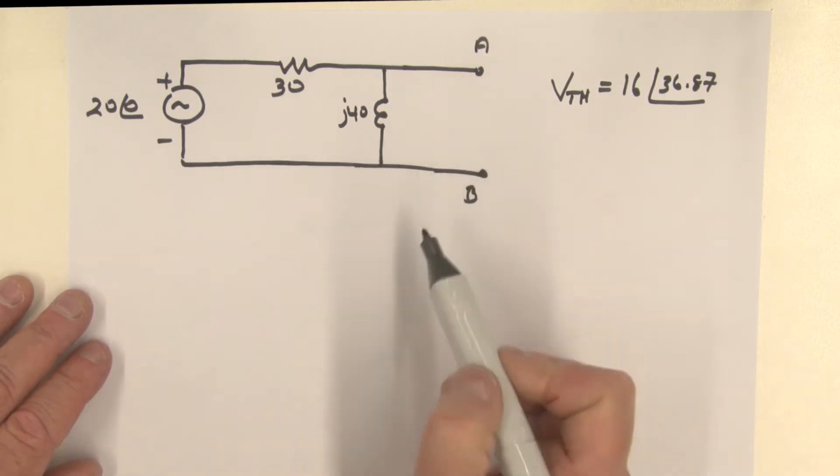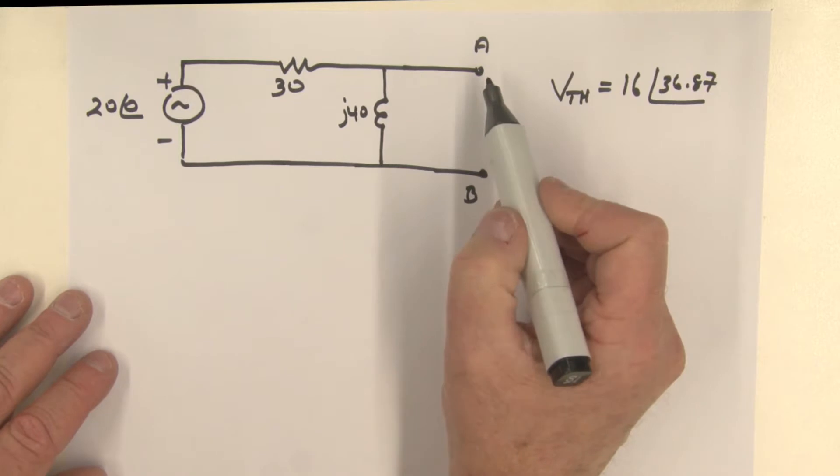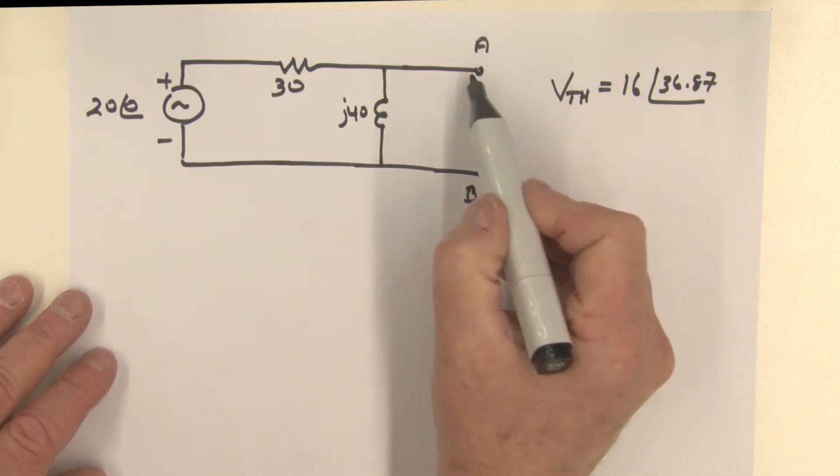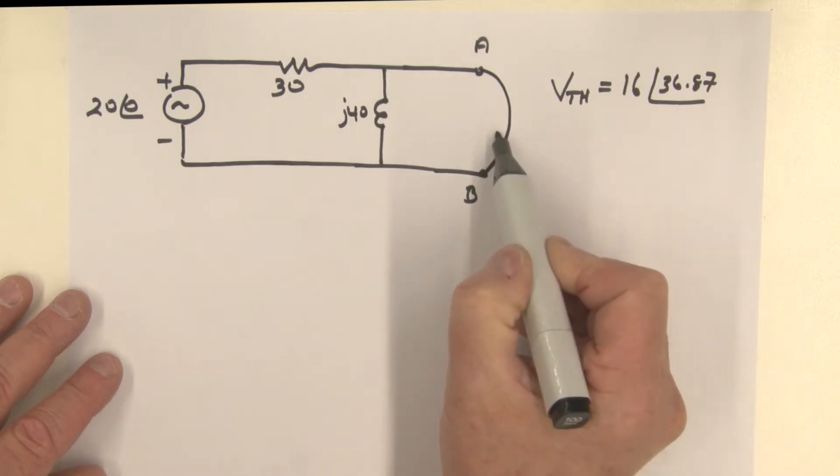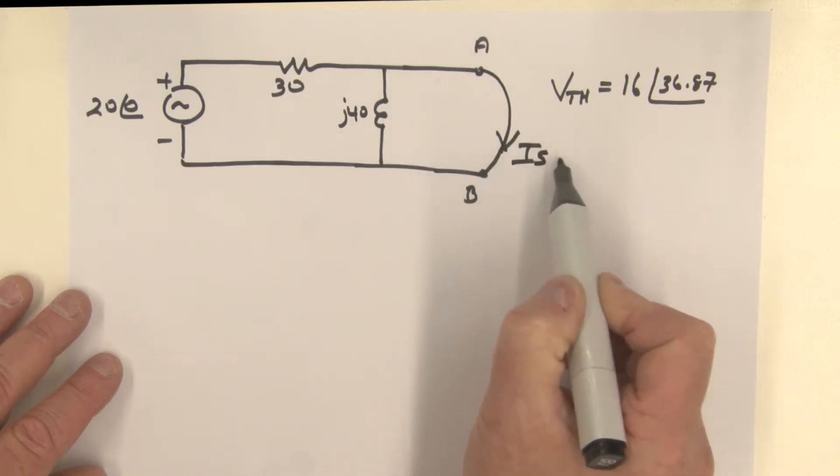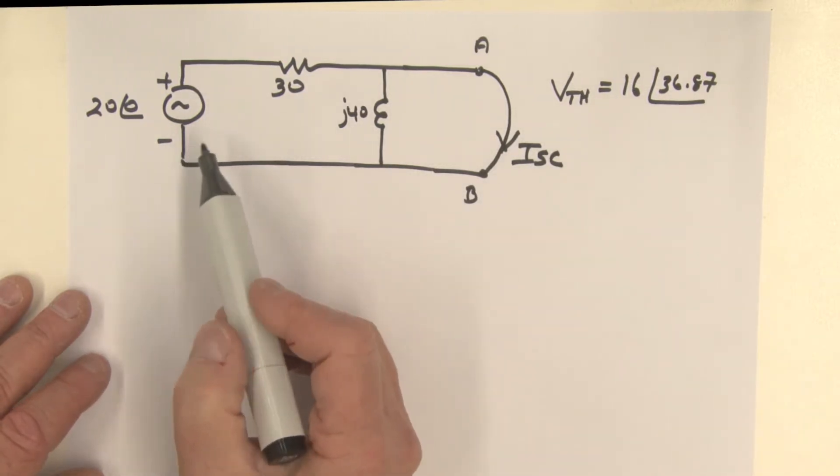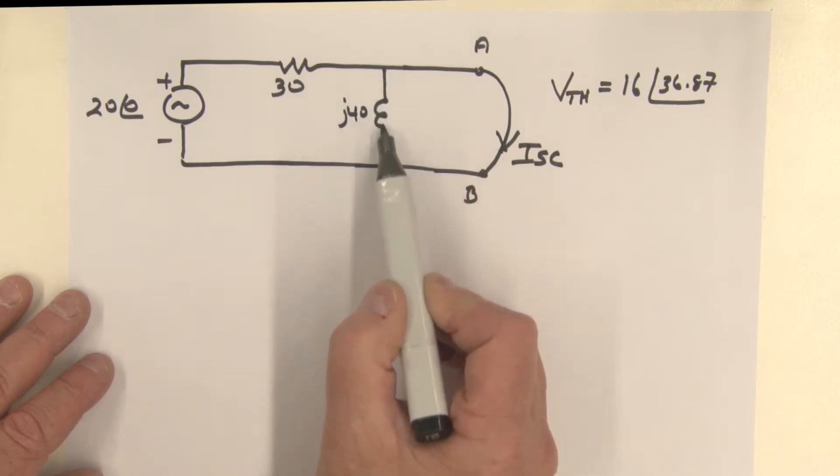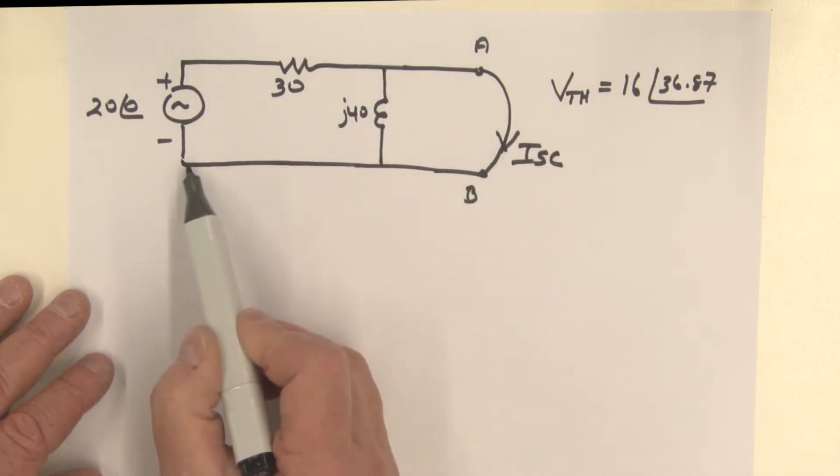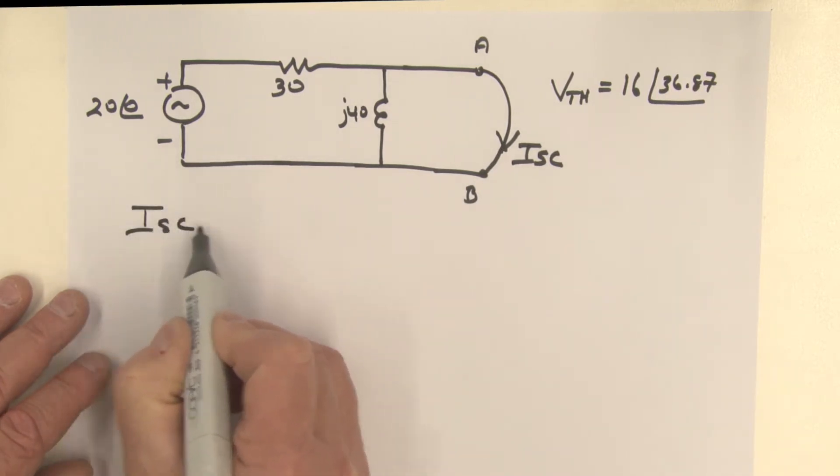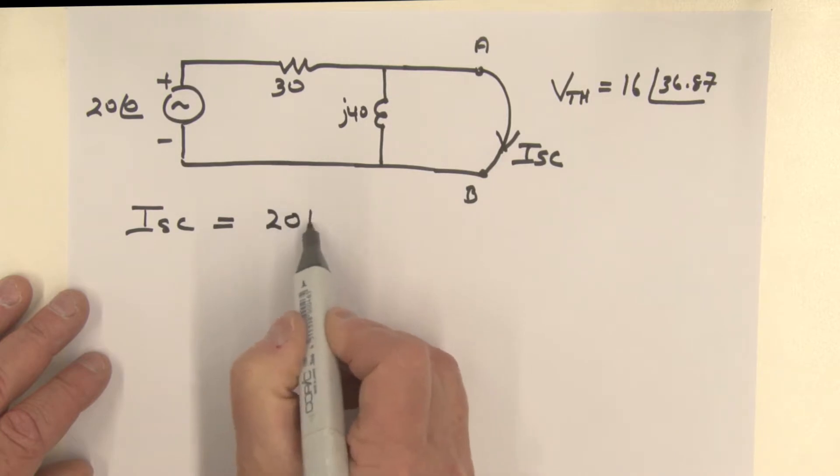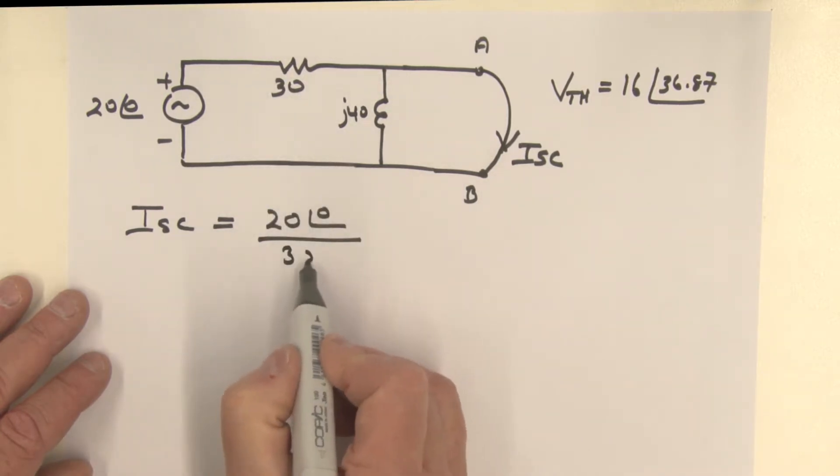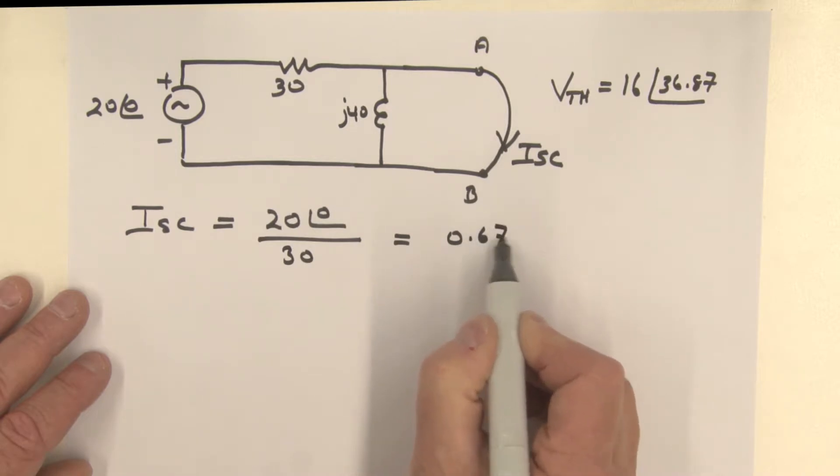Now we need to find Z Thevenin, and what we can do is basically find the short circuit current. We're going to put a short between terminals A and B, and we're simply going to calculate ISC. The short circuit current, basically our current is going to go through the 30 ohm resistor, it's not going to go through here, it's simply going to follow this path. So I short circuit is equal to 20 angle zero divided by 30 ohms, and this comes out to be 0.67 amps at an angle of zero.